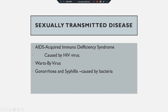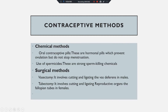Another STD is gonorrhea and syphilis — these two diseases are caused by bacteria. So for exam purposes: STDs means sexually transmitted diseases. Diseases like AIDS and warts are caused by virus, and gonorrhea and syphilis are caused by bacteria. Now, contraceptive methods — contraceptive method means methods used to prevent pregnancy.